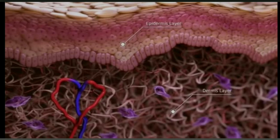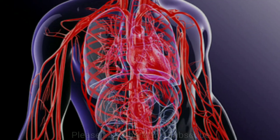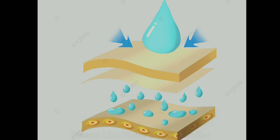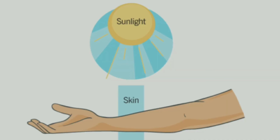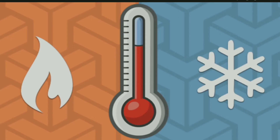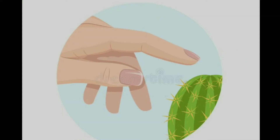Functions of the skin: One — protecting internal parts of the body like muscles, bones and organ systems. Two — helping preserve moisture in the body. Three — synthesizing vitamin D. Four — releasing sweat to regulate body temperature. Five — giving protection from heat and cold. Six — functioning as the sensory organ of touch.